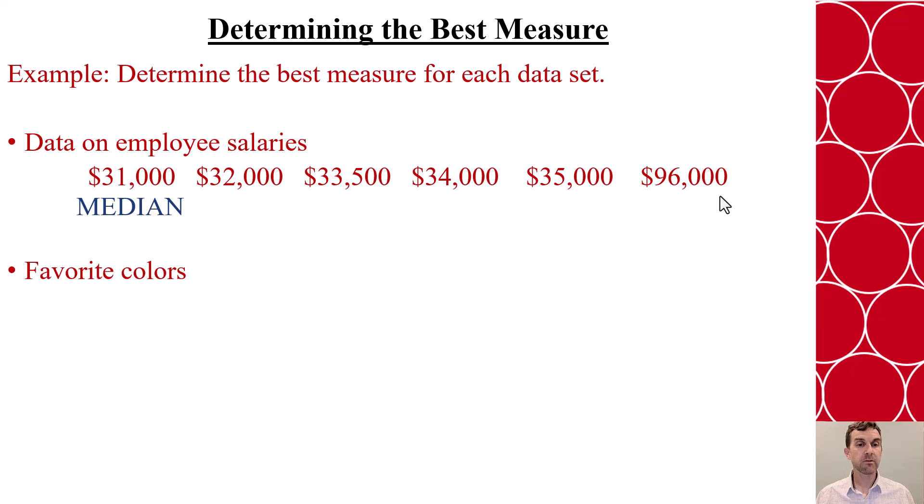If we look at asking people favorite colors and we have all these colors, we see that the most commonly repeated word is blue. There's no numbers here to calculate, so we know because it's a set of categorical data, we use the mode.